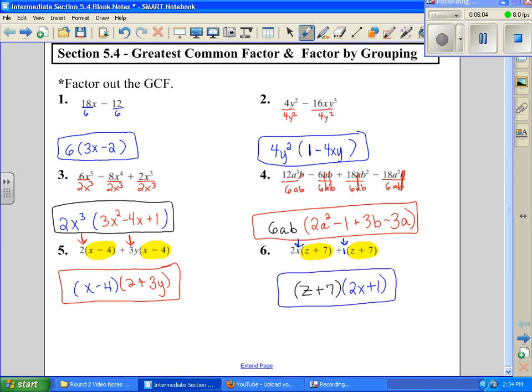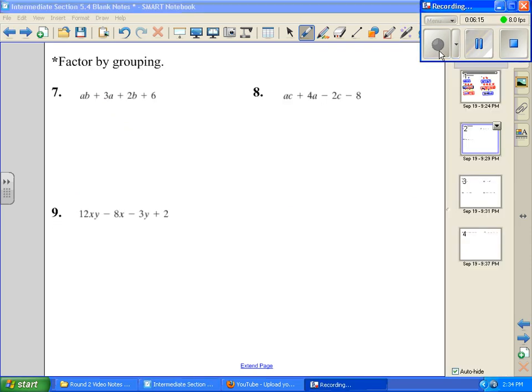So our first page, what we worked on was just factoring out a greatest common factor. And then we're going to move on and do factor by grouping in just a second. Factor by grouping is most of the time, most often used when you have four, at least four terms.